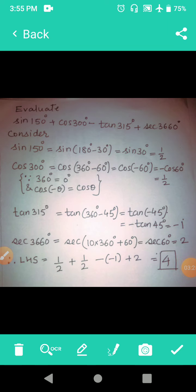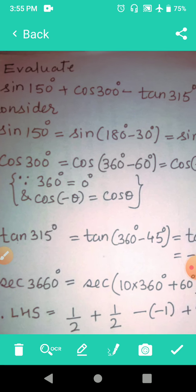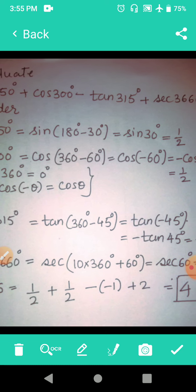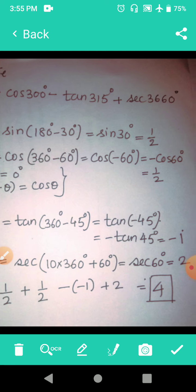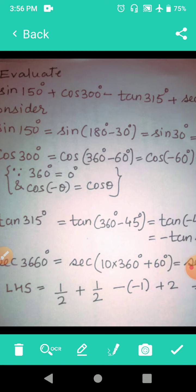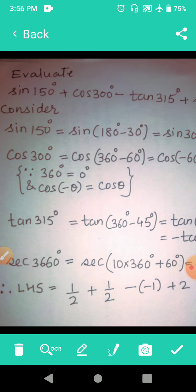Try to do a bigger example. We are supposed to find the value of sin 150 + cos 300 - tan 315 + sec 3660. Now there are four angles here which are above 90, so let us find the values one by one. So for that we will write 'consider'. So consider sin 150 degrees.